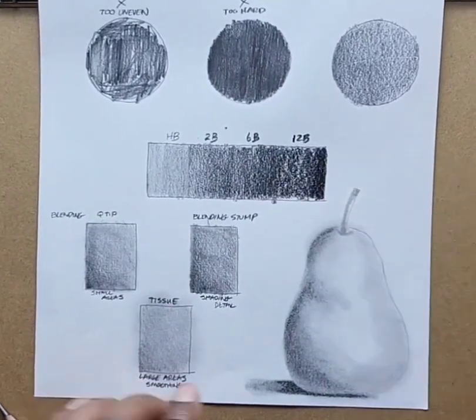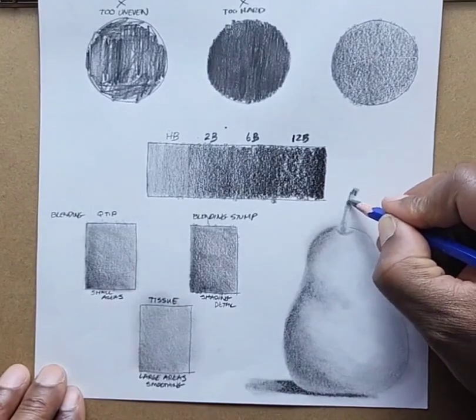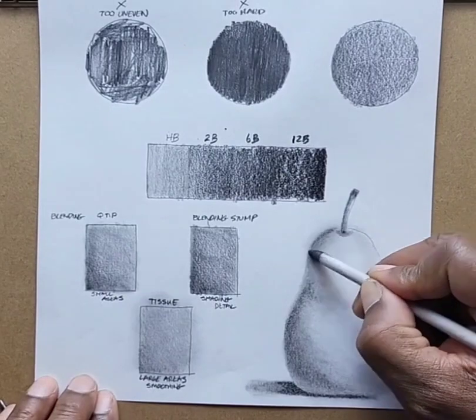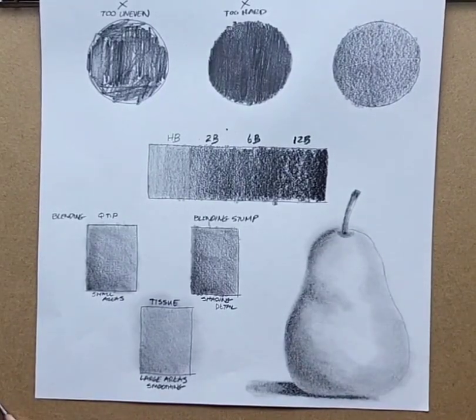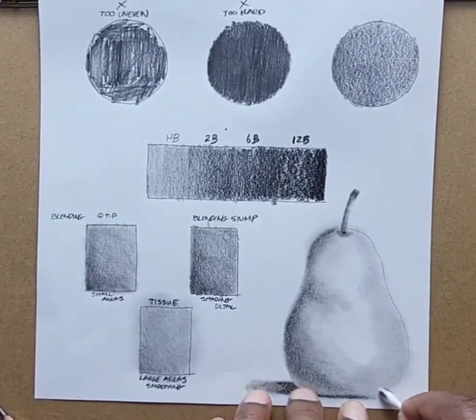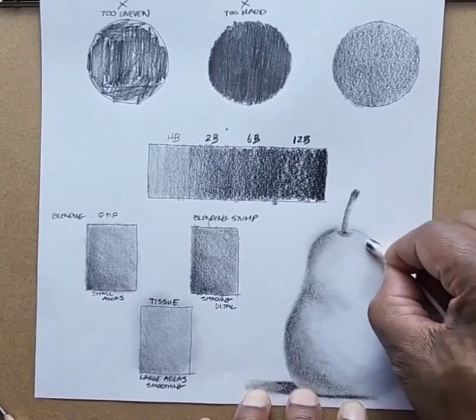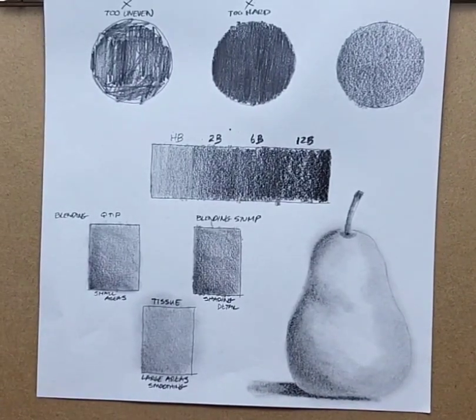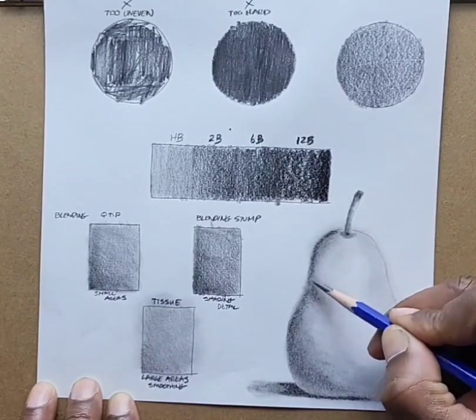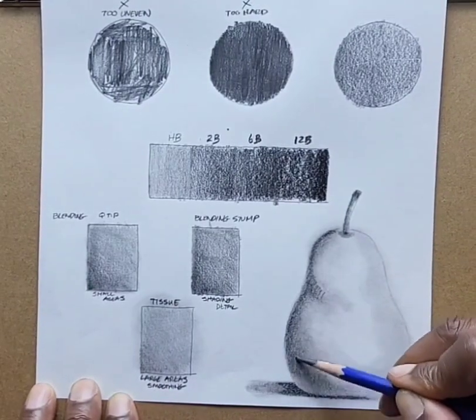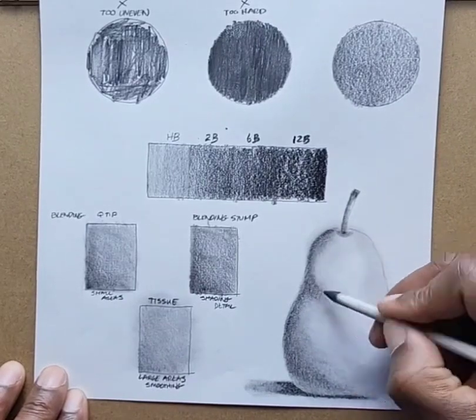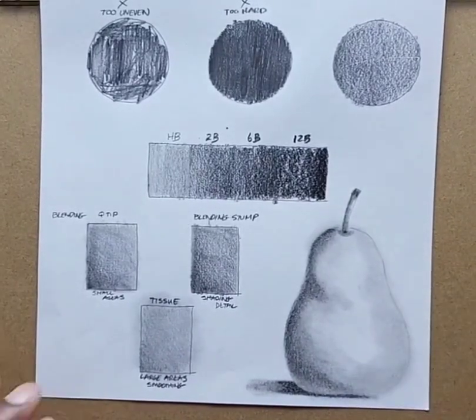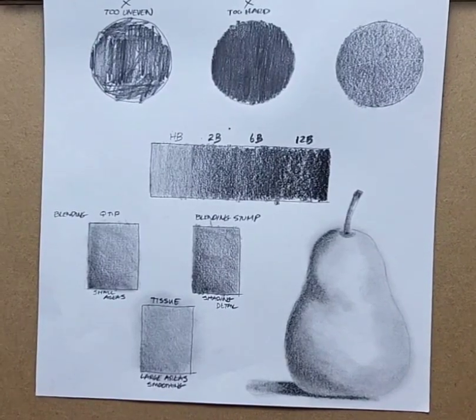Just remember, the pencil grades change between the manufacturers—that is, the level of lightness to the level of darkness. The H's and B's are always going to be the same. The designation for H is hard, the designation for B is black. The higher the number in the B's, the darker; the higher the numbers in the H, the lighter. Just remember, with H you can score your paper, so be very careful. And that's it.